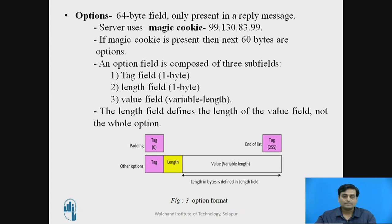The next field is the options field. This is a 64-byte long field present only in reply messages, not in request messages. Once the client finishes reading the information, it looks for a magic cookie — a number represented in dotted decimal format just like an IP address. The magic cookie has the value 99.130.83.99. If this magic cookie is present in the reply message, then the next 60 bytes are options. This option field is composed of three subfields.